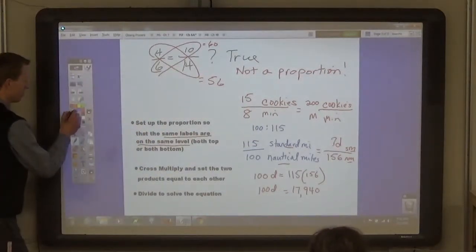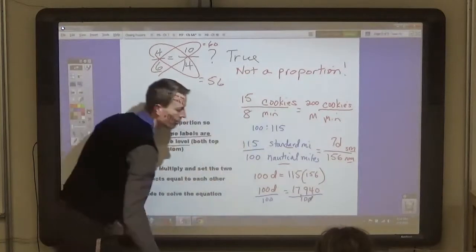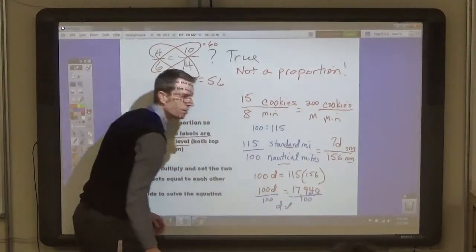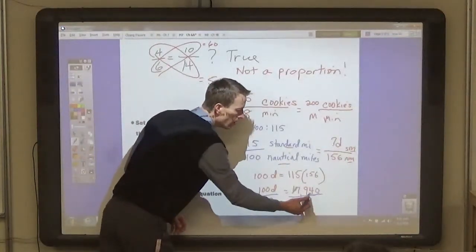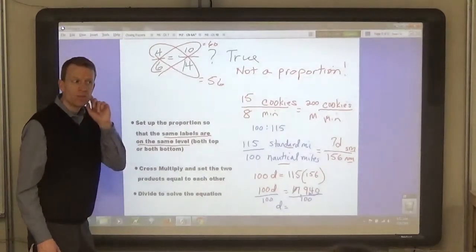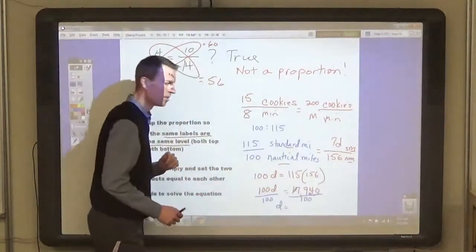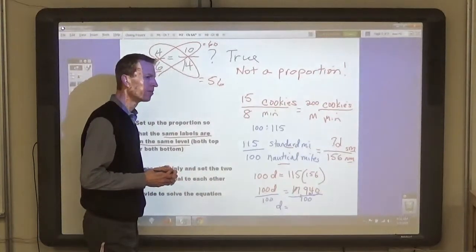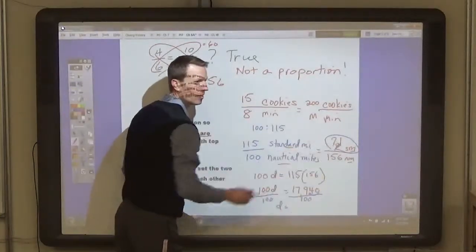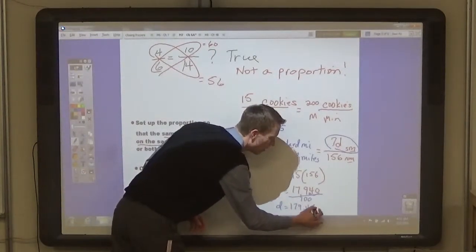Then, what's the last step? Yep. Divide by 100 on both sides. So move the decimal two places over when you divide by 100. And D is what? I can't even see the board. Well, come up here. Or look at your book. What is it? Example three. 179.4 standard miles.